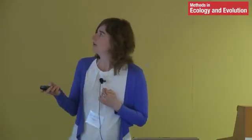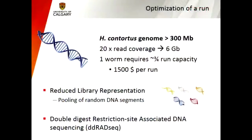The H. contortus genome is about 300 megabases. If I were to sequence that on a MiSeq — which I'm currently using — that would mean sequencing one worm at sufficient quality using one run, and as one run is about $1,500 including all preparation, it's very expensive to sequence the whole genome. Instead, what we do is create a reduced library representation: we take a subset of the DNA of a worm, do that for multiple worms, pool them, and then sequence. This gives a lot more data on a lot more worms for the same amount of money. The technique I'm using is called Double Digest Restriction Site-Associated DNA Sequencing, DD-RADSeq.